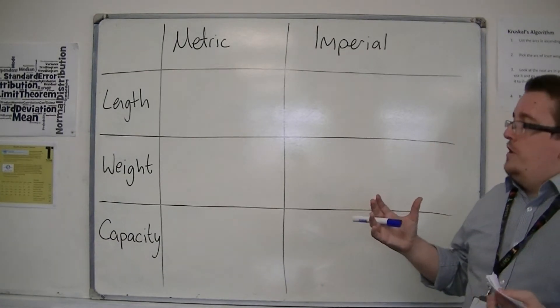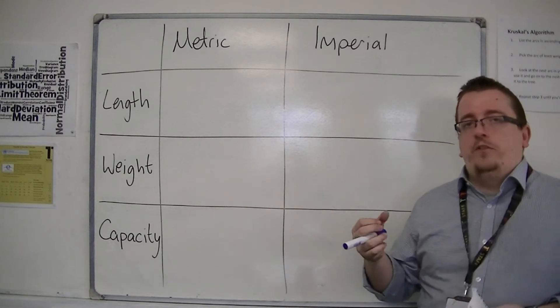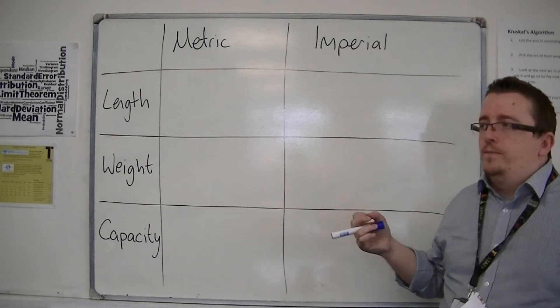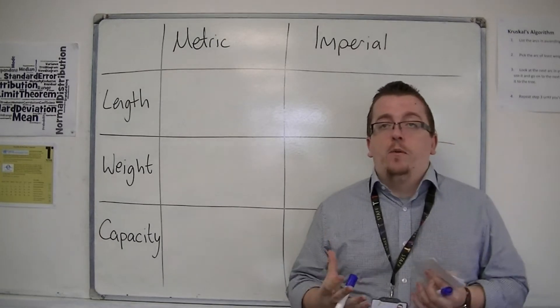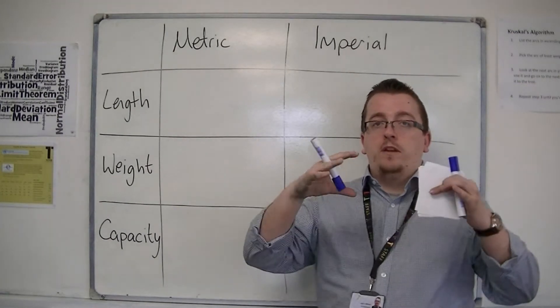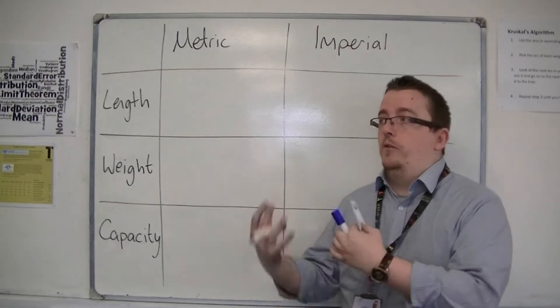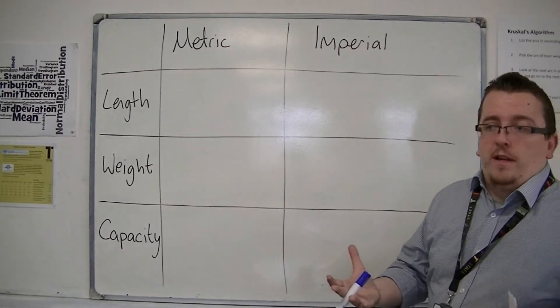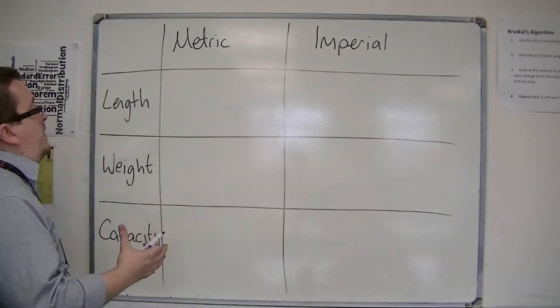So, Metric and Imperial Units can be quite confusing as to which is which. But in general, what you need to know is that for Metric Units, you'll be considering these in amounts of 10, usually. So for Metric,